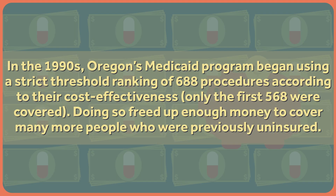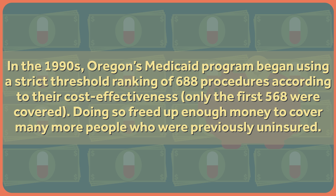We've tried in a limited way to use such data in the United States. In the 1990s, Oregon's Medicaid program began using a strict threshold ranking of 688 procedures according to their cost-effectiveness. They only covered the first 568. Doing so freed up enough money to cover many more people who were previously uninsured. But the plan hit a snag in 2008, when a woman with recurrent lung cancer was denied a drug that costs $4,000 a month because the proven benefits weren't enough to warrant the costs. The national backlash was indicative of our collective difficulty in discussing the fact that some treatments might not be worth the money.